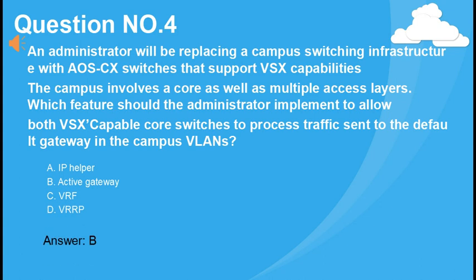An administrator will be replacing a campus switching infrastructure with AOS-CX switches that support VSX capabilities. The campus involves a core as well as multiple access layers. Which feature should the administrator implement to allow both VSX-capable core switches to process traffic sent to the default gateway in the campus VLANs? A. IP Helper. B. Active Gateway. C. VRF. D. VRRP. Answer: B.